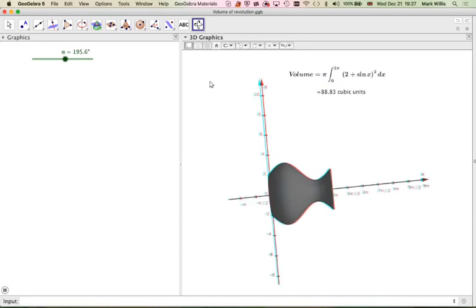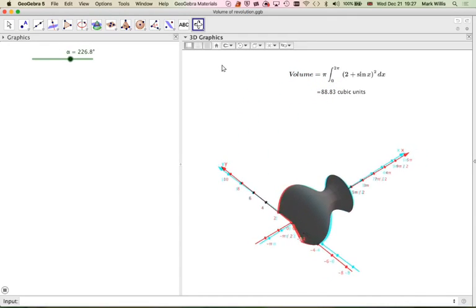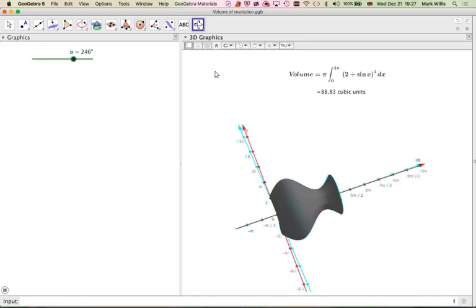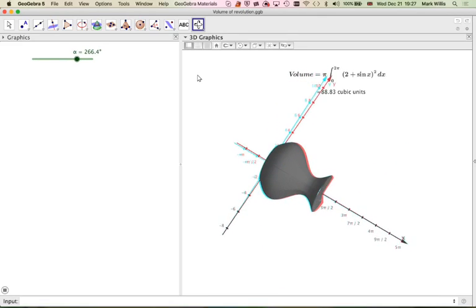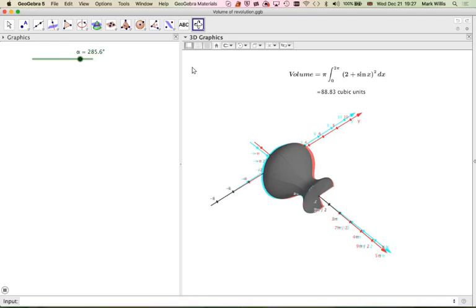Exactly the same thing, but in 3D. You can see the shape going around the x-axis here, looking at it from different angles.